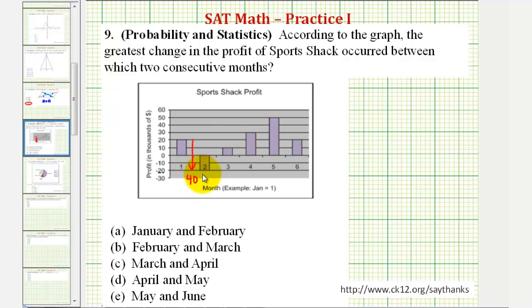From the second month to the third month, the profits went from negative twenty thousand to positive ten thousand, which is an increase of thirty thousand.